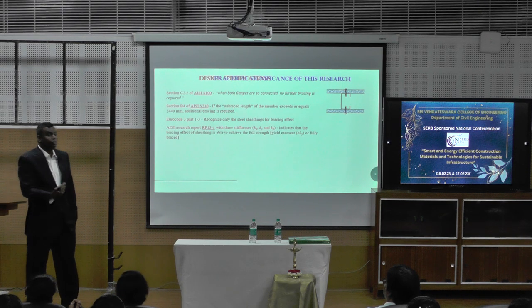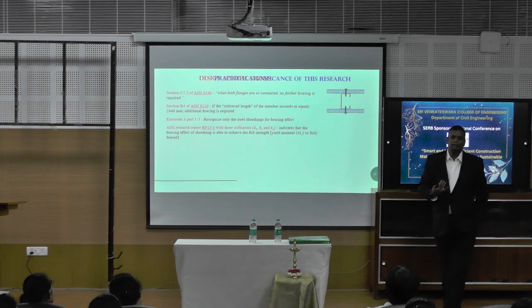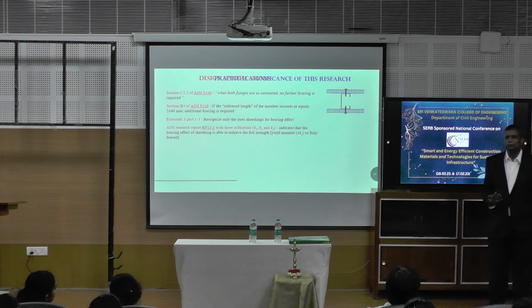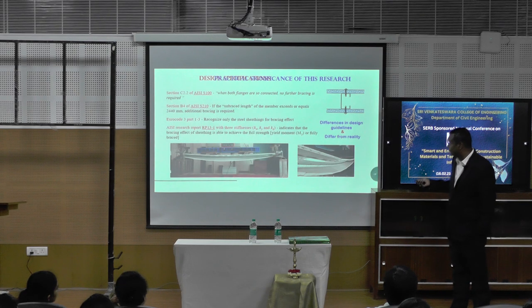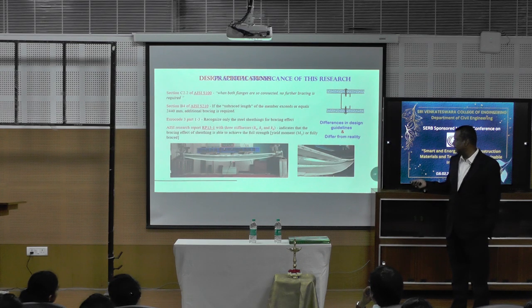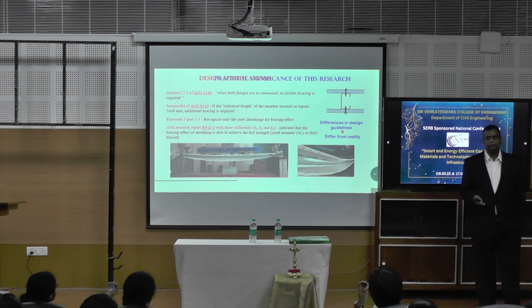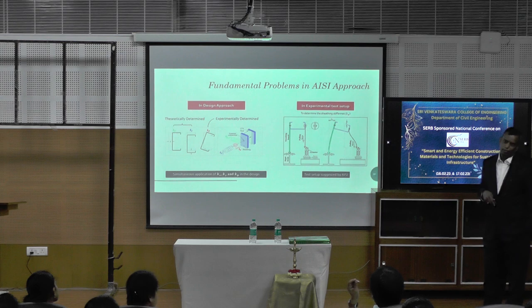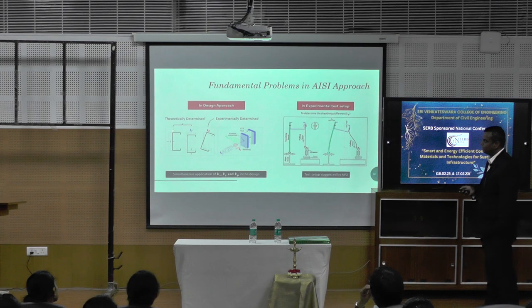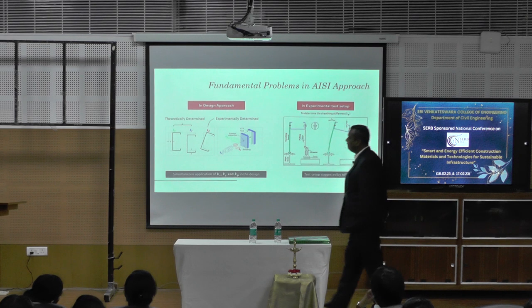Important specifications are important because that's the one that is going to help protect me — that's my shield. But the shield is giving me confusing answers. So there are differences in design guidelines, and to make matters worse, it is also different from reality, because we did our own tests. The test results say that nothing will happen, but we can see that failure is happening. So when we say something, we have to say it with certainty — we have to do calibrated experiments to prove or disprove things. What is the problem in AISI? That's what we wanted to find out. The design approach has two things: KX and KY, which are theoretically determined, and KV, which they say is determined experimentally. AISI is using an experimental test setup to determine KV.